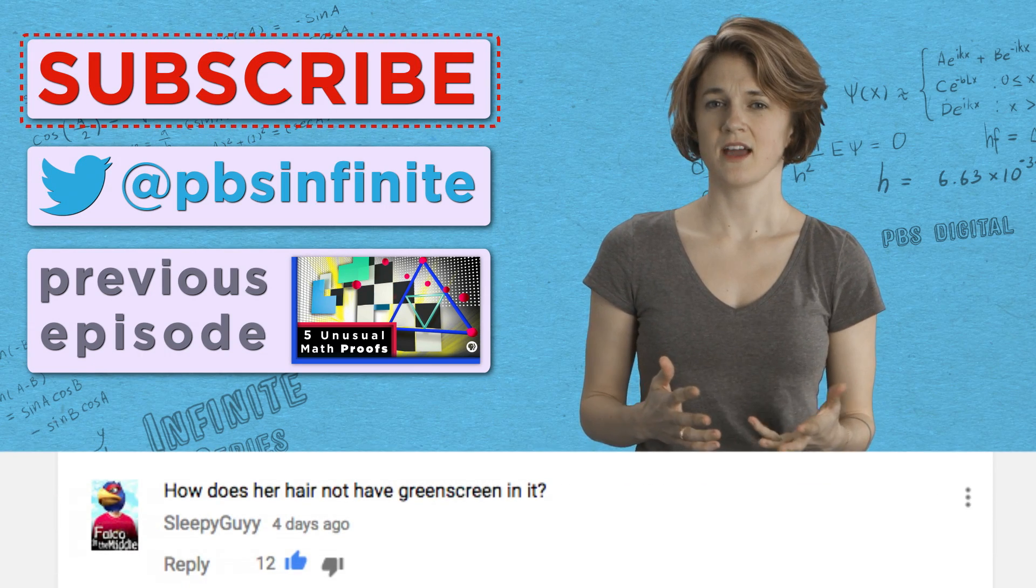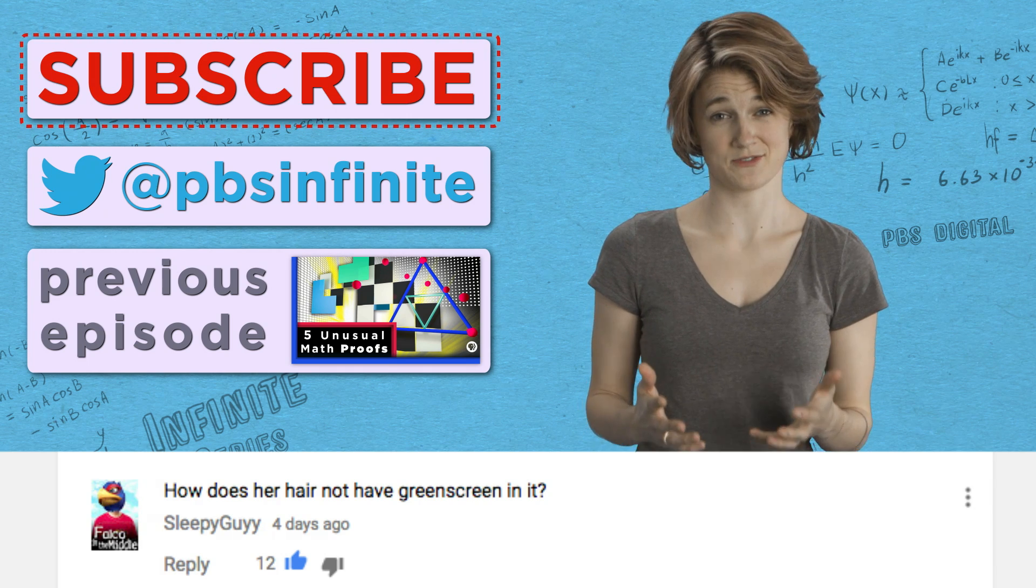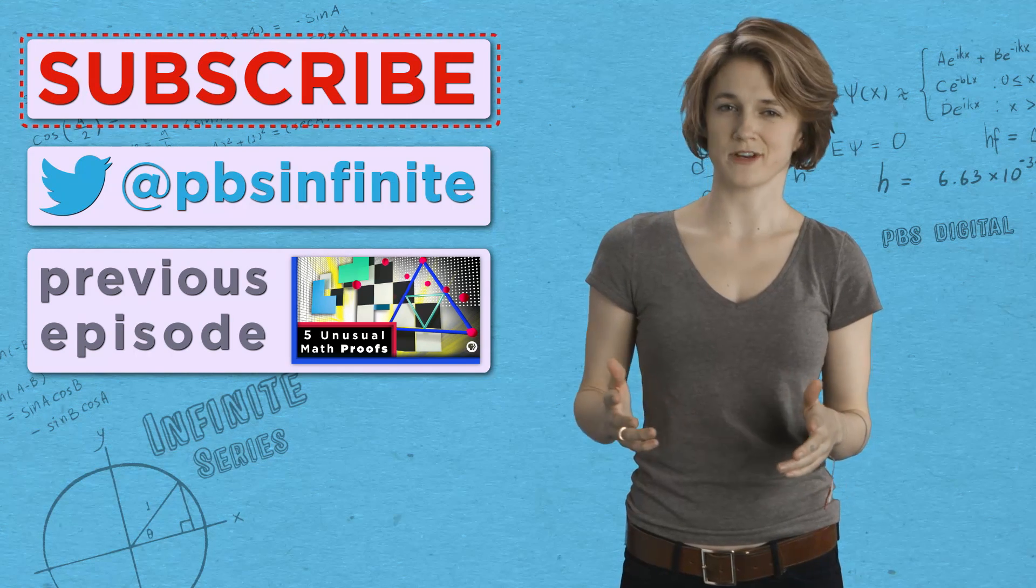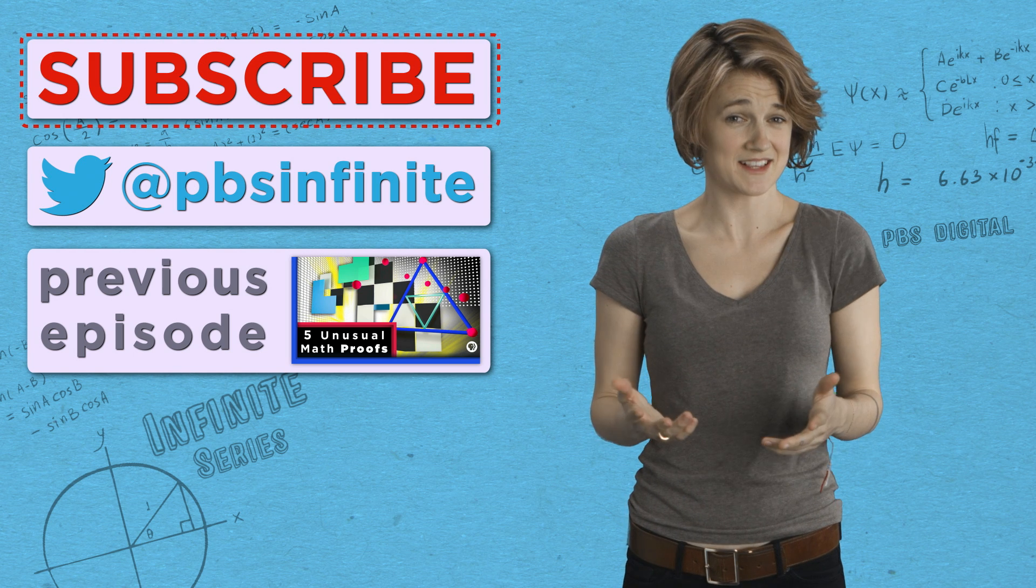Finally, Sleepy Guy asks, how does her hair not have green screen in it? Easy. We don't shoot in front of a green screen. We shoot in front of an endless hallway.